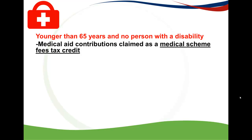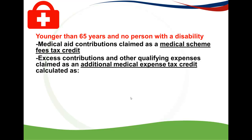If a person is younger than 65 and no person has a disability, you get two credits. The first is your Medical Schemes Fees Tax Credit (MSFTC), and the second is your Additional Medical Expense Tax Credit (AMETC). The MSFTC applies if you contributed to a Medical Aid Fund, and it's a fixed amount per month. The AMETC applies if you have excess contributions and other qualifying medical expenses.